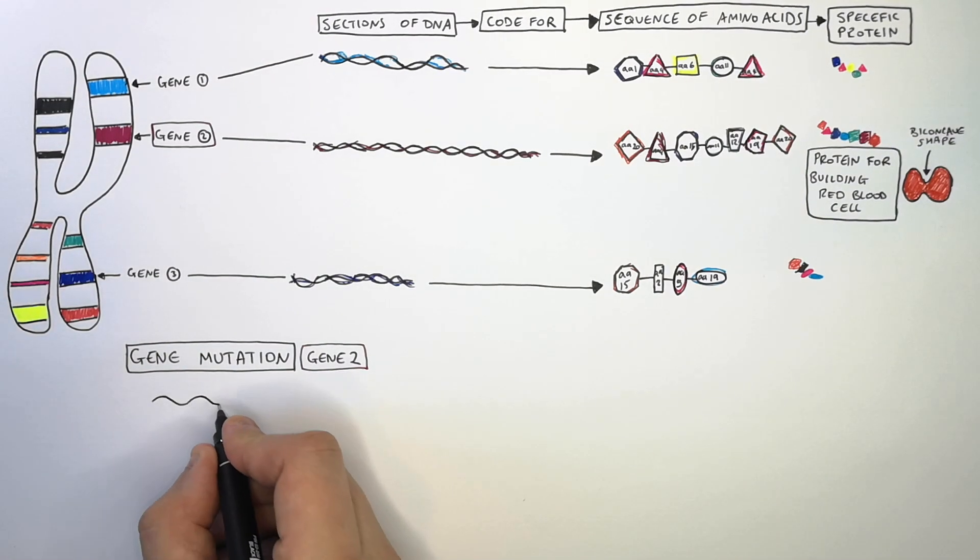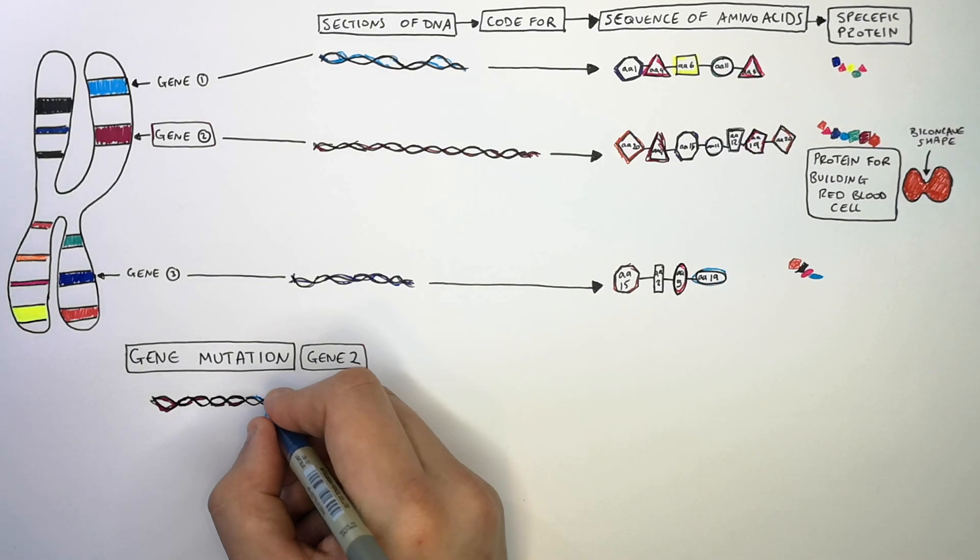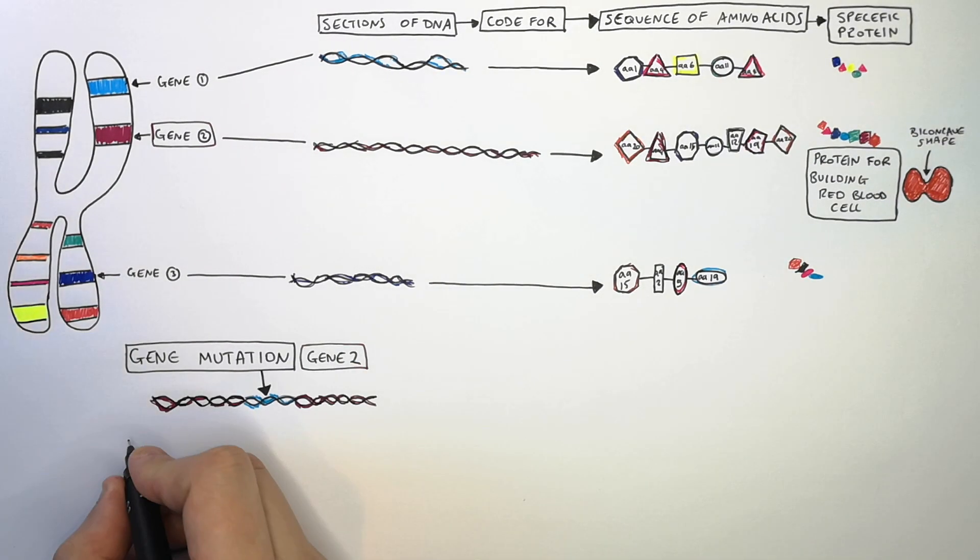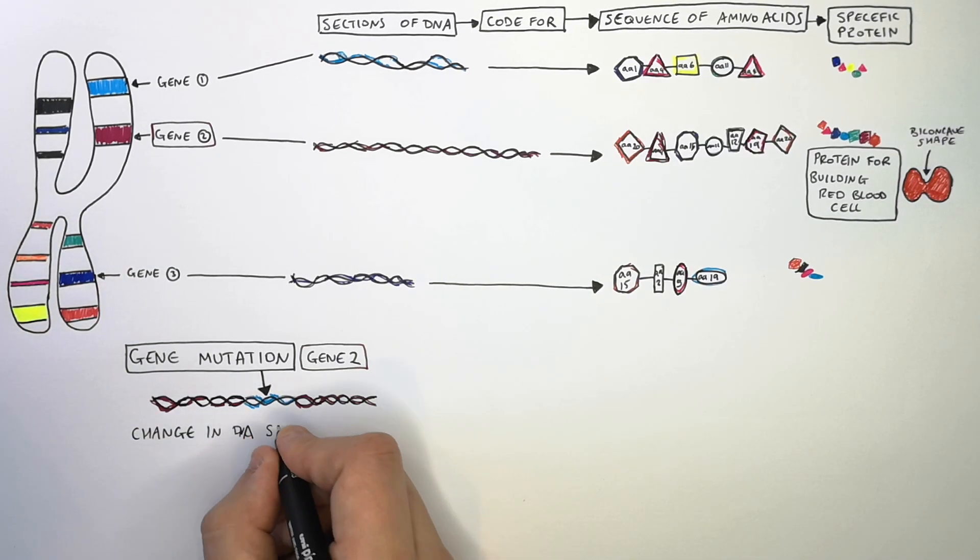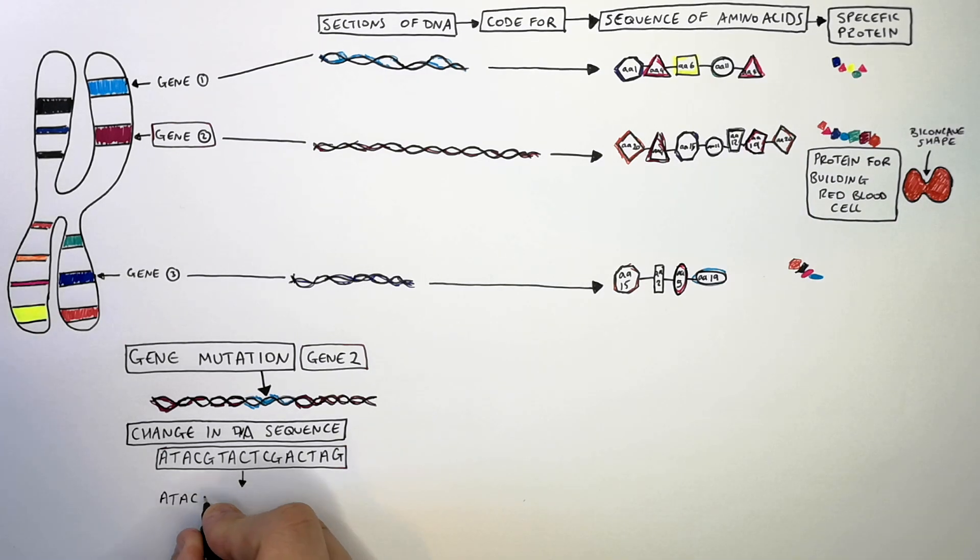Let's imagine that this small section of DNA mutates where the blue section of DNA mutates. This means that there is a change in the DNA sequence of this section here whereby I have highlighted the different bases of the two genes before mutation and after mutation.